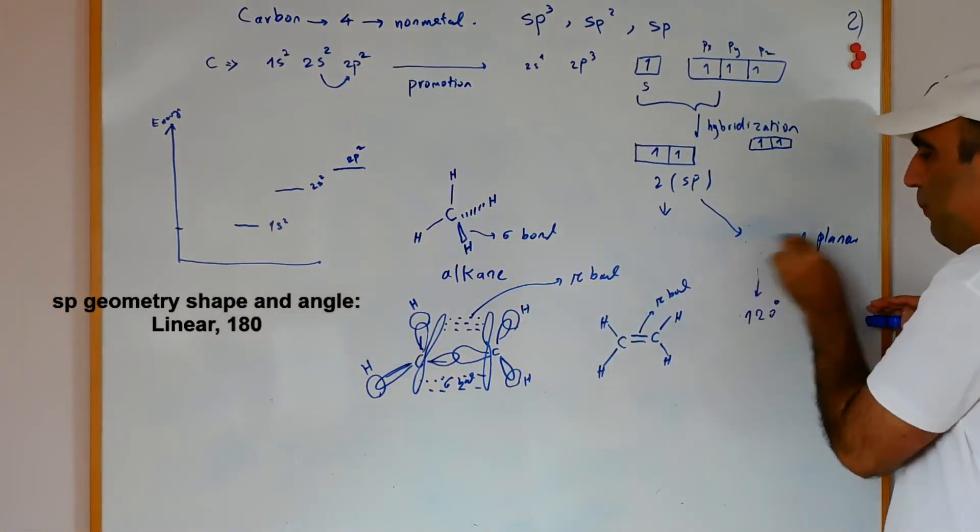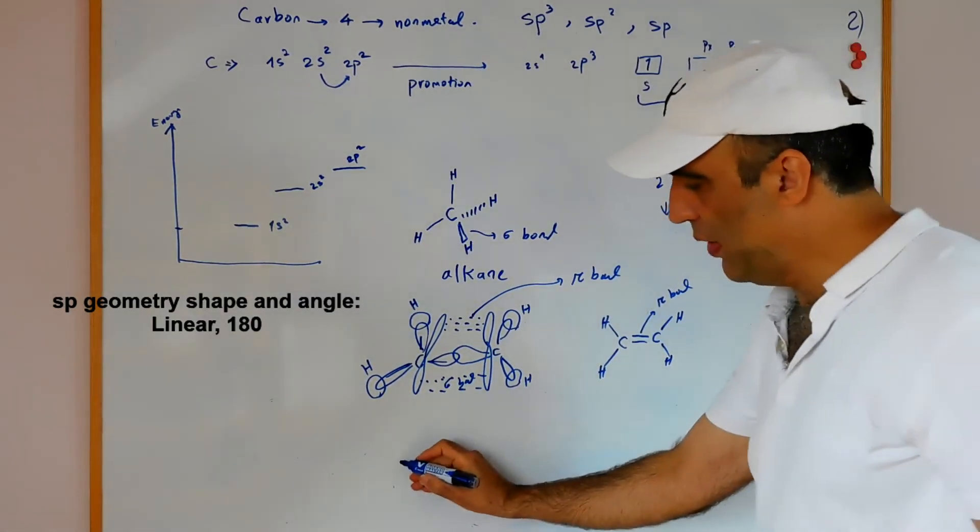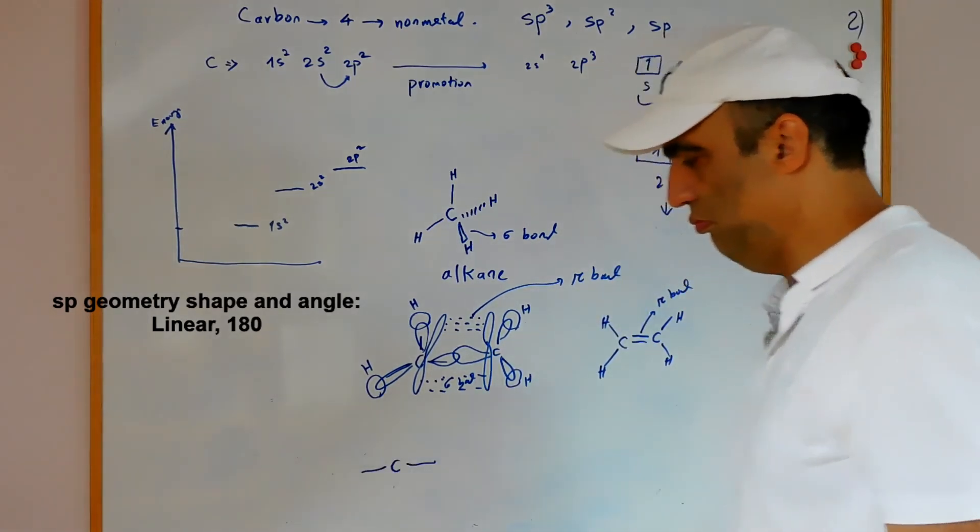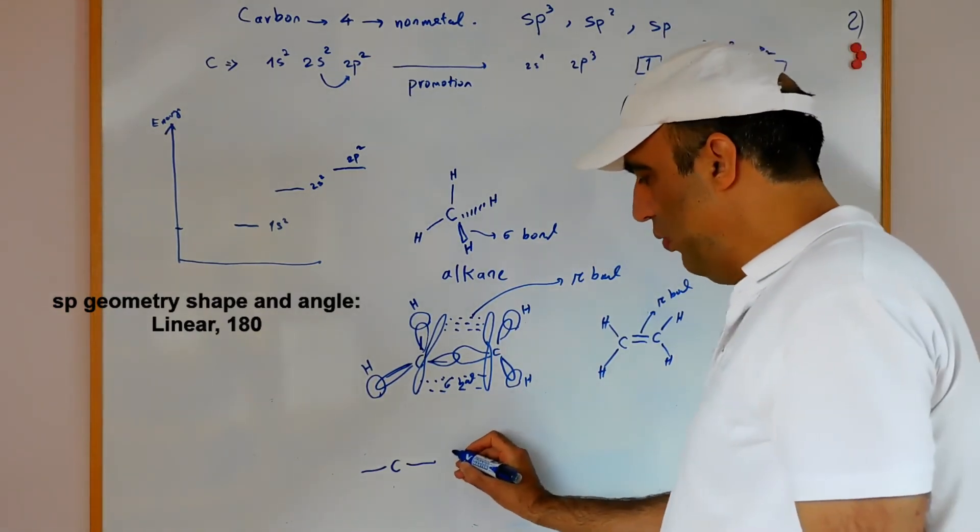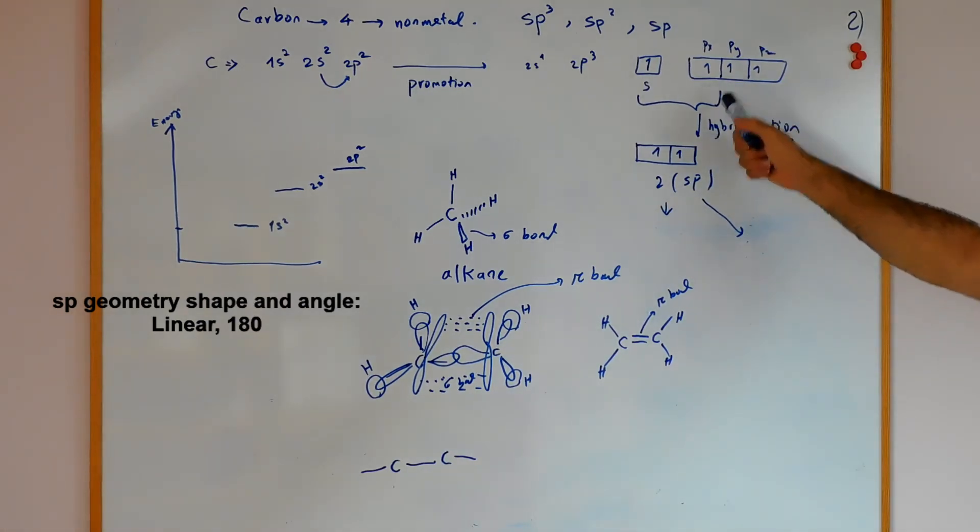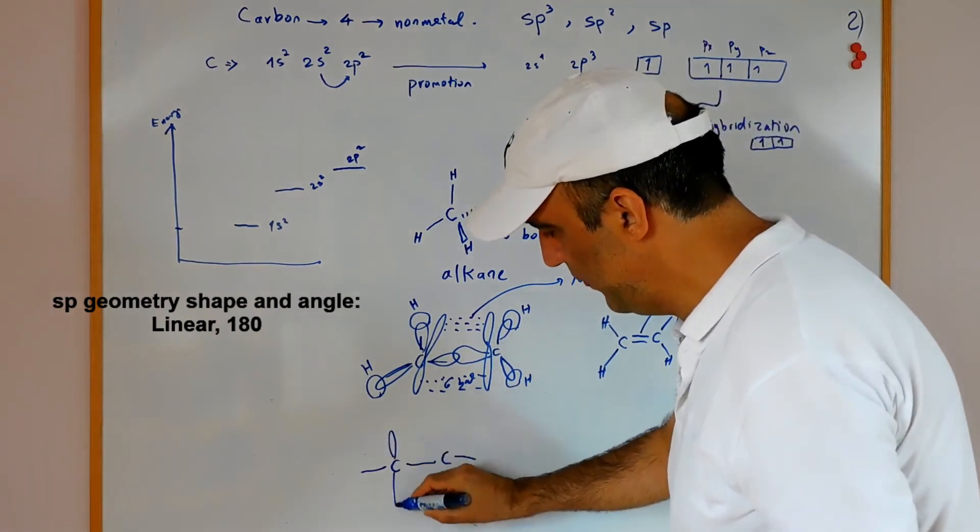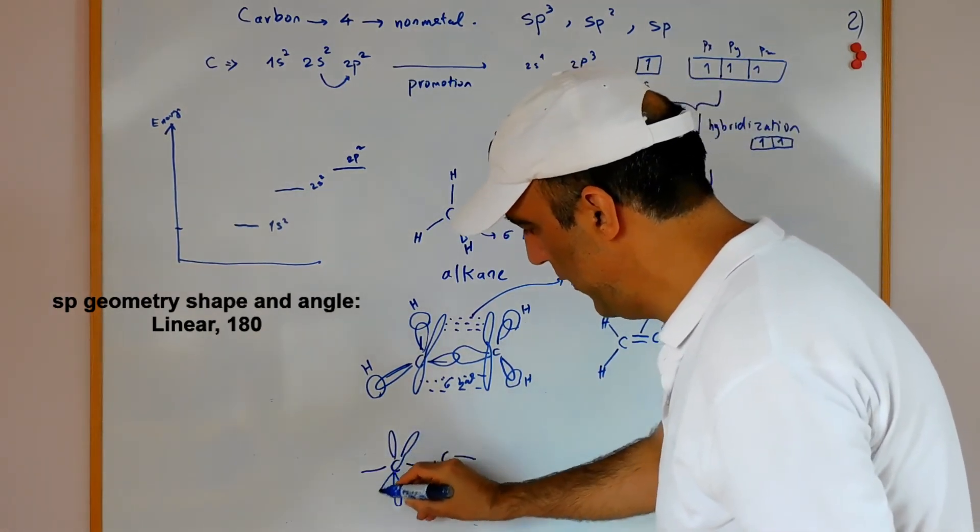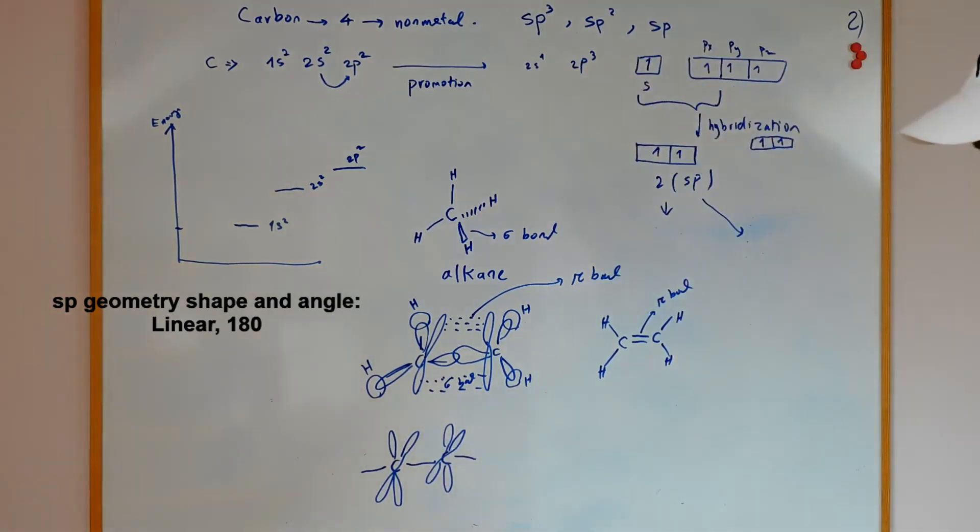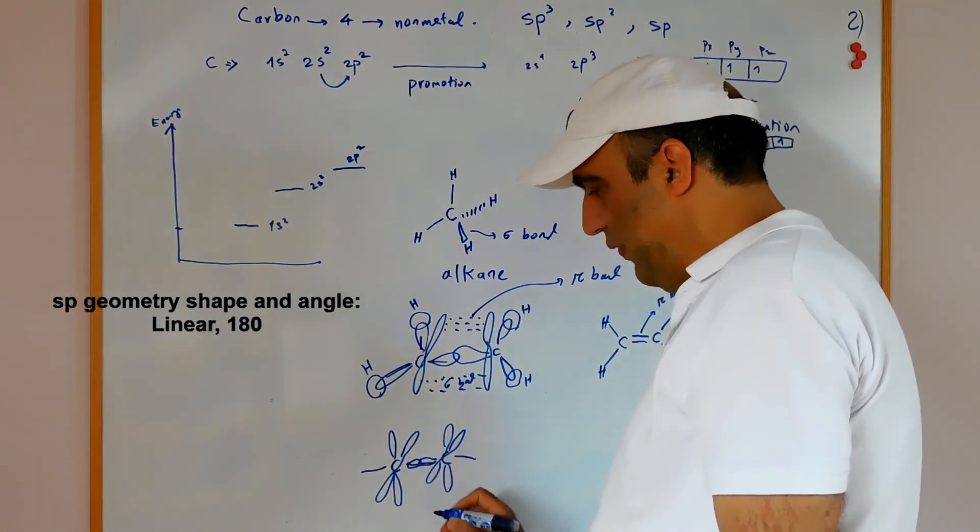As you see in the shape I draw here, for example I have carbon with two sp - one sp and other sp. It can make with other carbon a bond. We will have py and pz remaining. For example, this is py and pz, py and pz. This sp can react with sp to make a sigma bond.